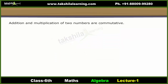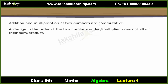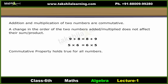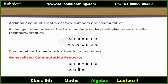Commutative property: Addition and multiplication of two numbers are commutative. In other words, a change in the order of the two numbers added or multiplied does not affect their sum or product. 9 plus 8 is the same as 8 plus 9. 5 into 6 is the same as 6 into 5. The commutative property holds true for all numbers. We can therefore generalize it with variables as: a plus b equals b plus a, and a into b equals b into a.